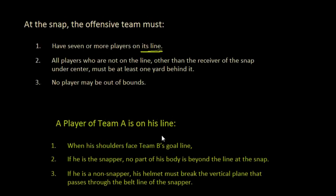In the NFL rulebook, the offense is called Team A and the defense is Team B. A player of Team A is on the line when his shoulders are facing Team B's goal line — so he has to be facing the direction he's trying to go and can't be turned around or sideways.